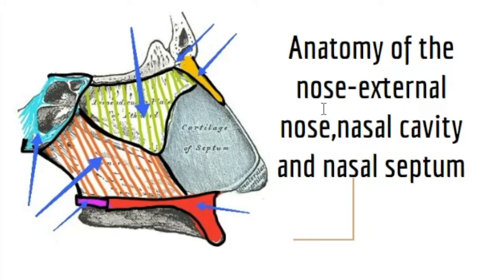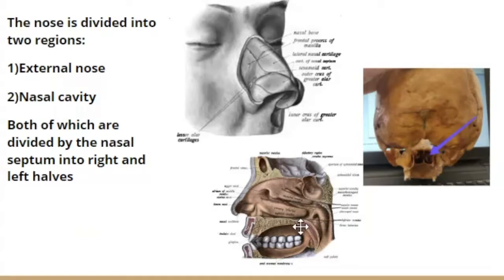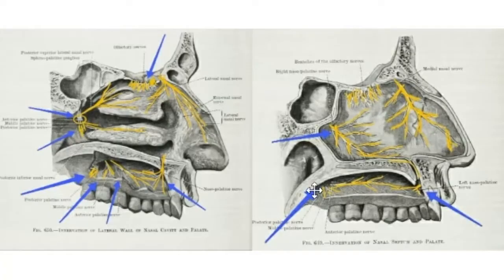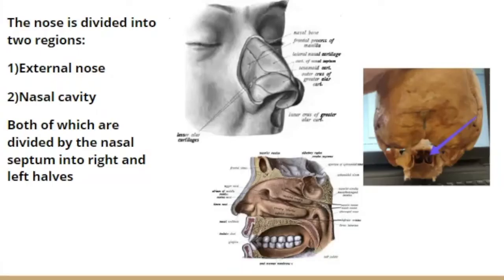Hello everyone, welcome to this lecture on the anatomy of the nose. I've divided this into three parts: in the first video we'll talk briefly about the external nose and in detail about the nasal cavity and the medial wall which is the nasal septum. In the next video we'll talk about the lateral wall, and finally we'll cover innervation, blood supply, venous drainage, and lymphatic drainage in detail.